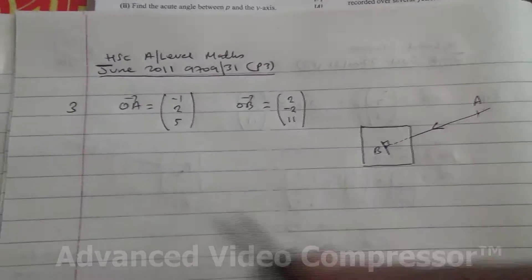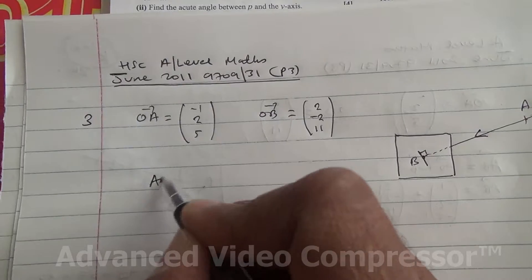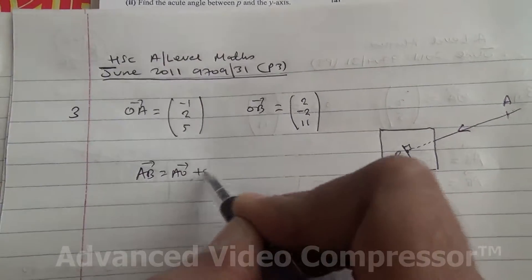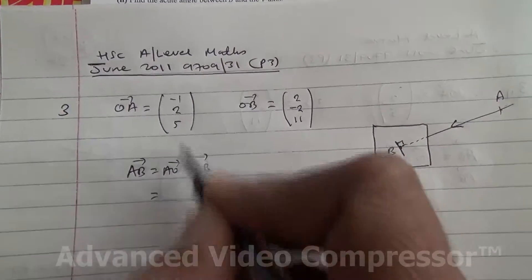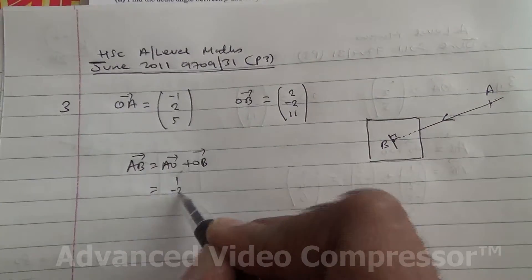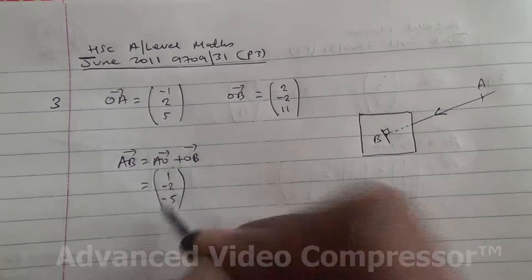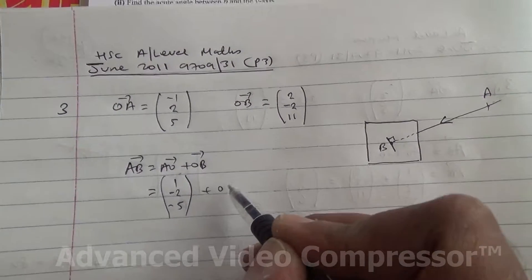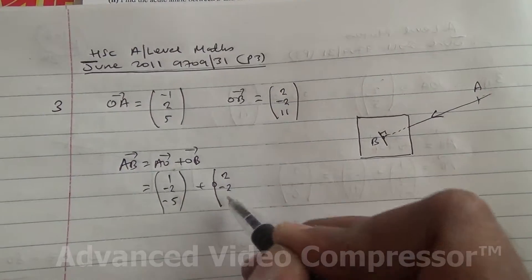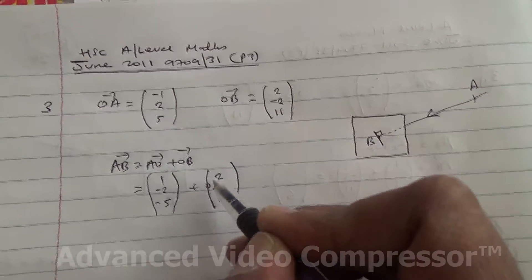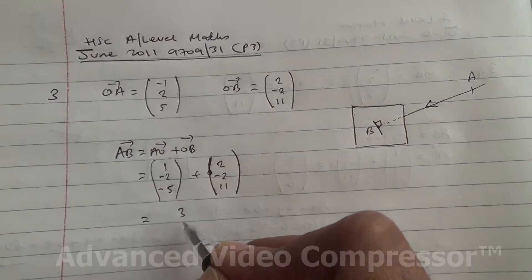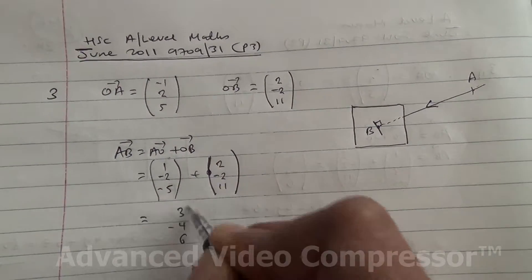How are we going to do this? First of all, I'm going to find the direction vector AB. So AB is going to be AO plus OB. AO is minus 1 becoming plus 1, so that's minus 2 and minus 5. Then OB is 2, minus 2, 11. We add these two vectors and we get 3, minus 4, 6.